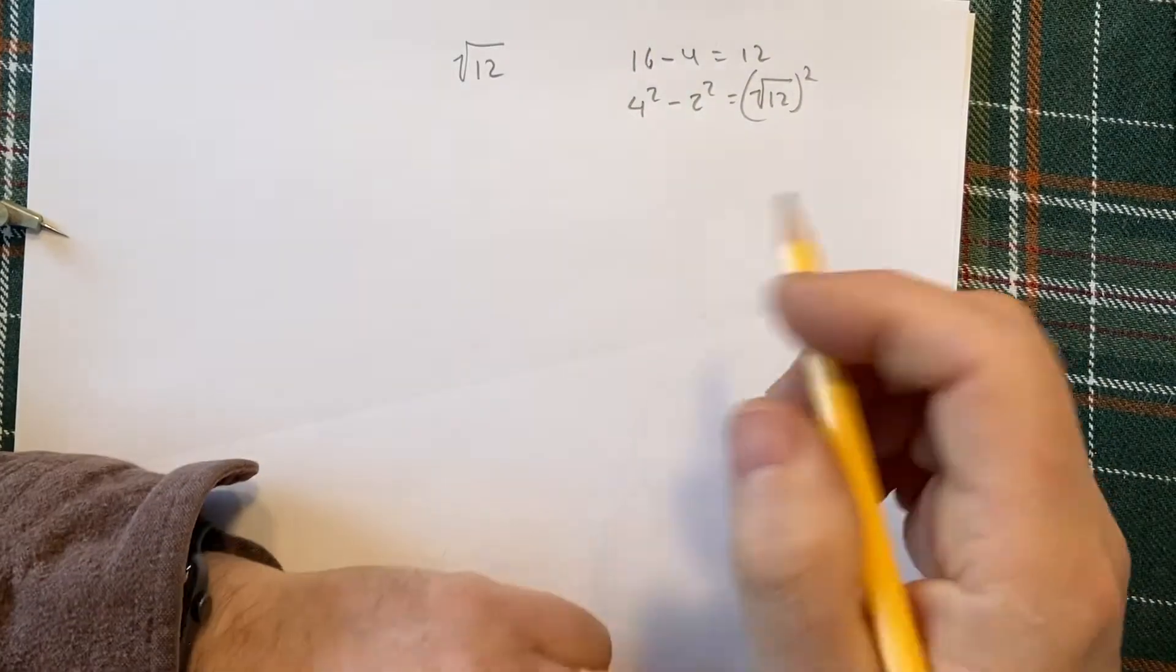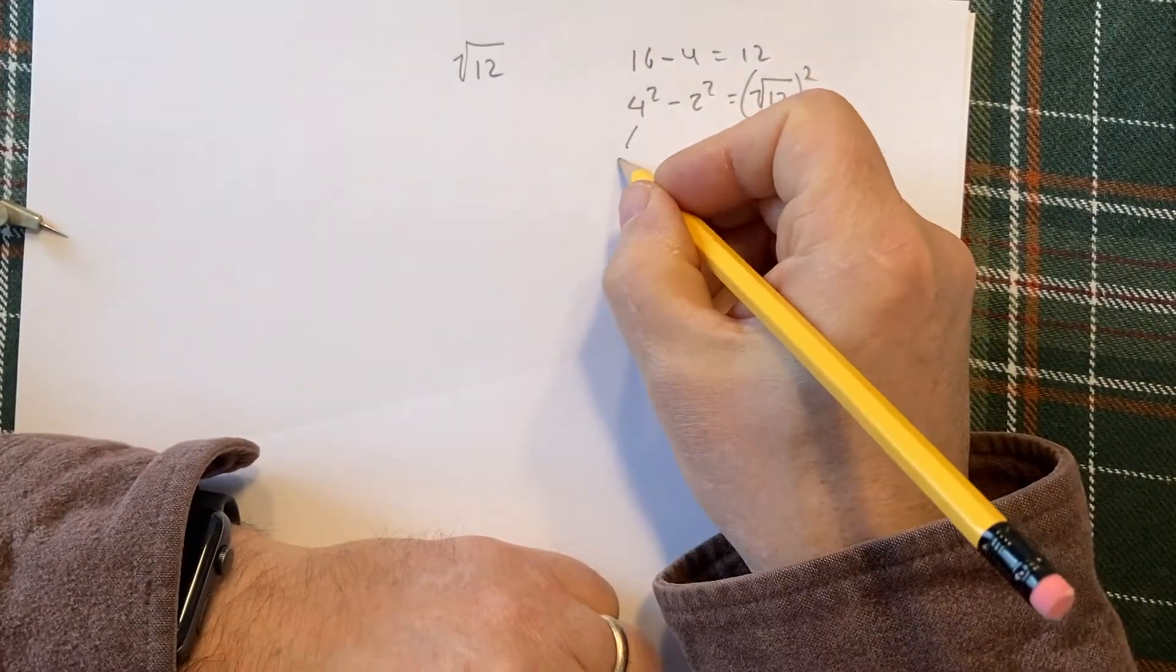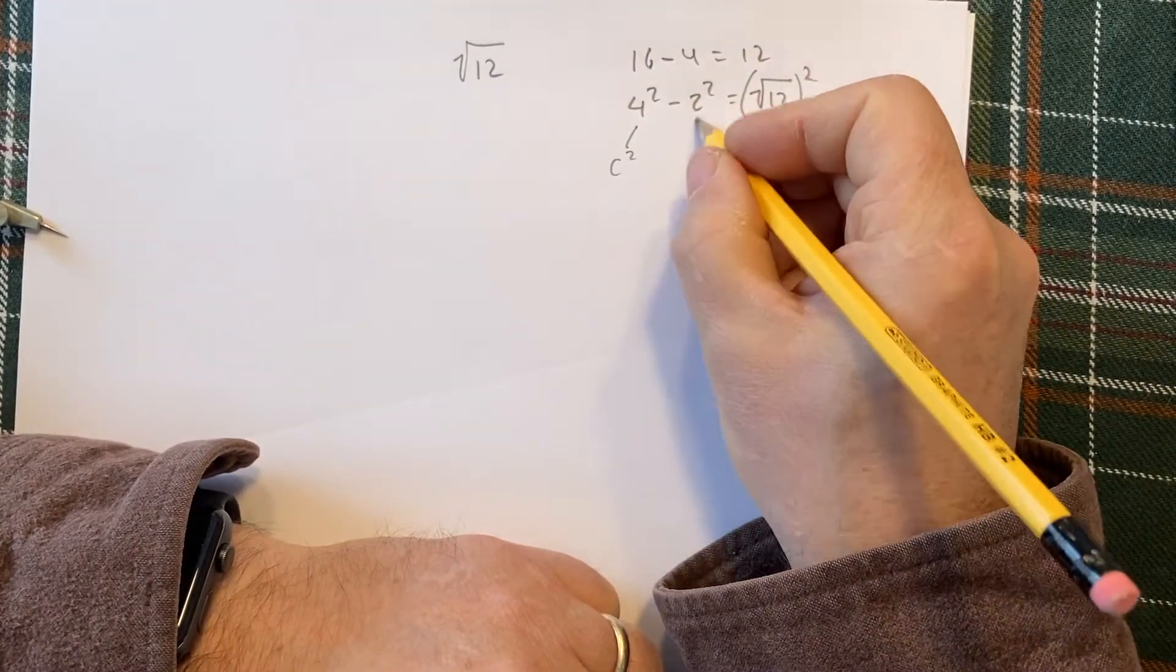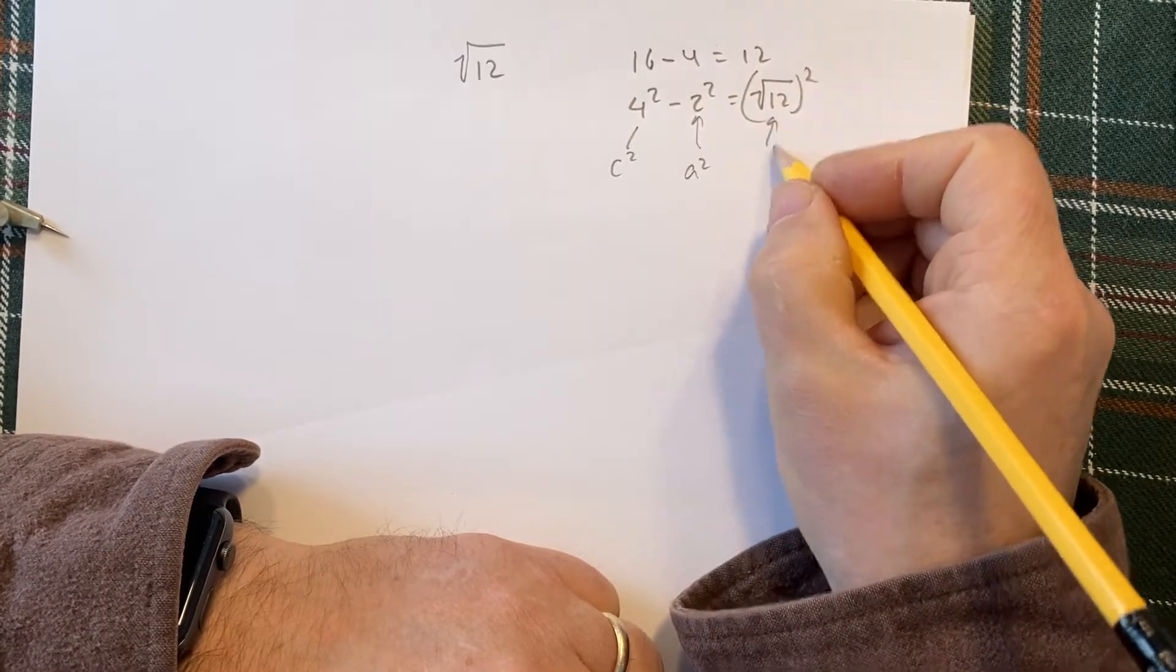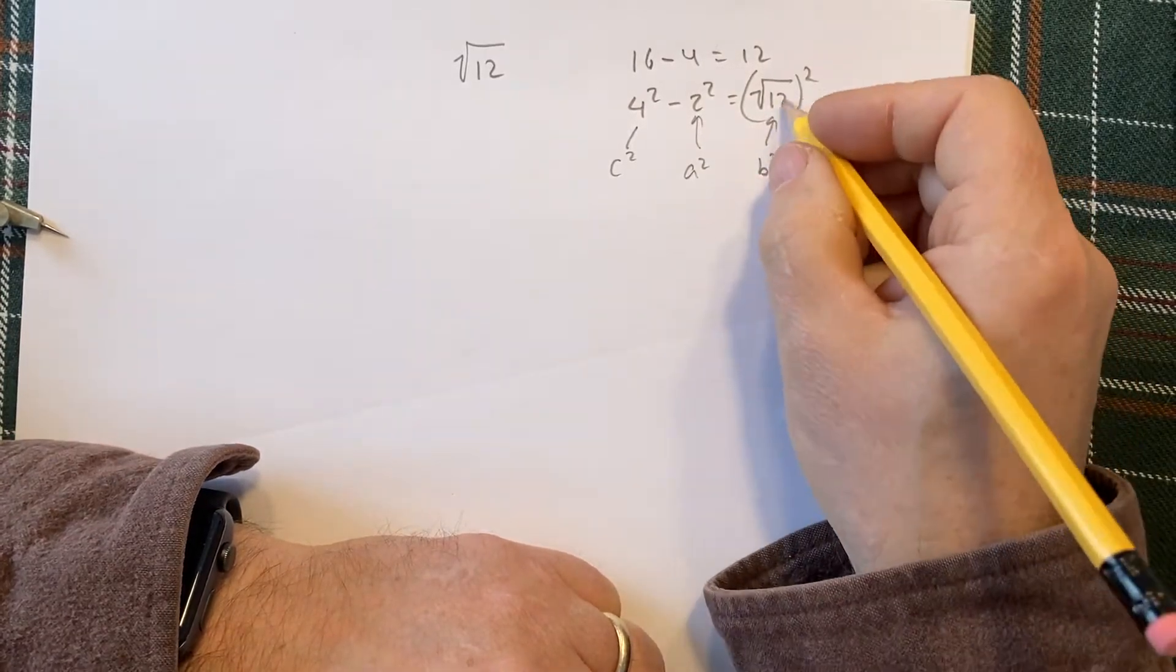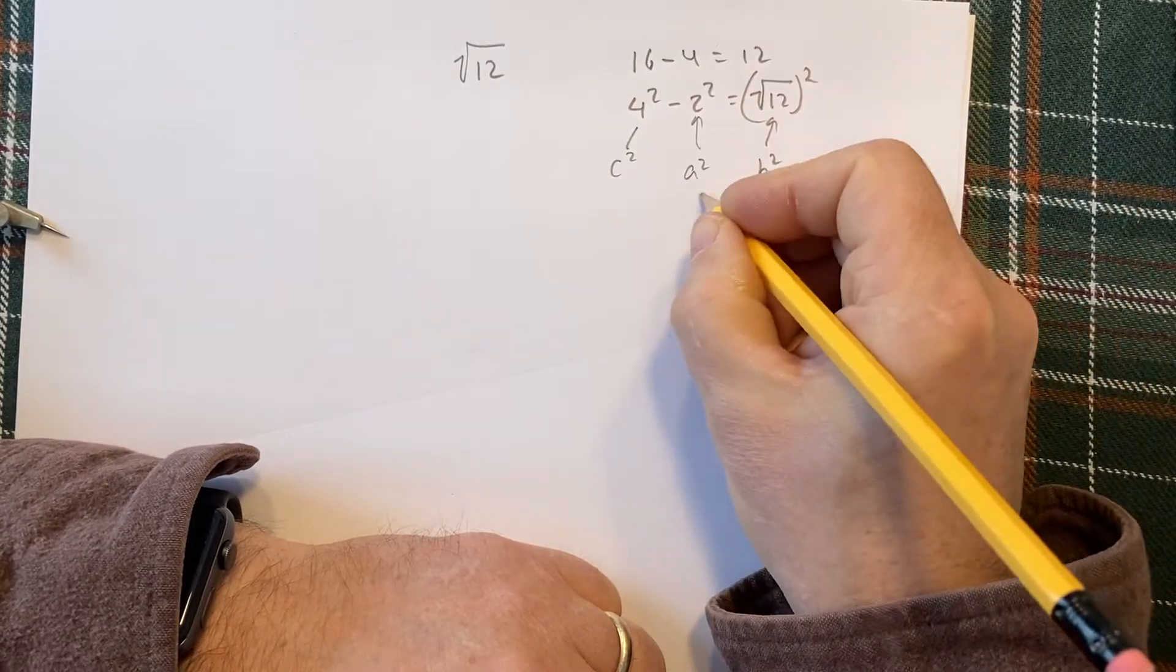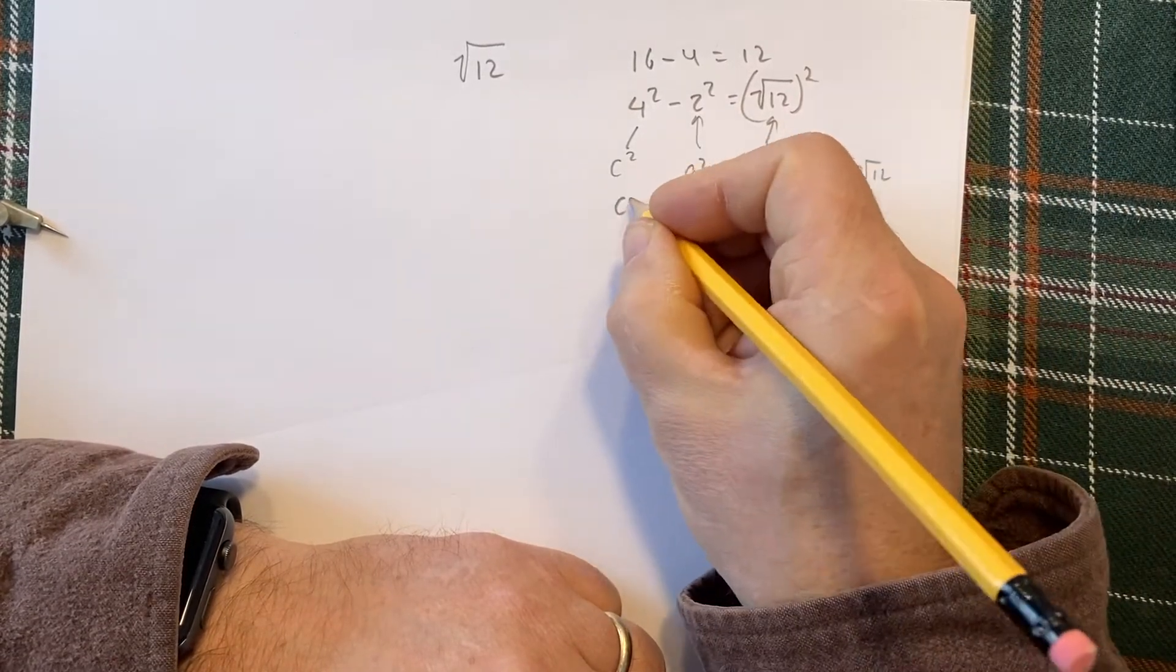That's what we're after. We know that this is going to be our c squared, or c is equal to 4. This is going to be our a squared, and this is going to be our b squared. b is root 12, our a is 2, and our c is 4.